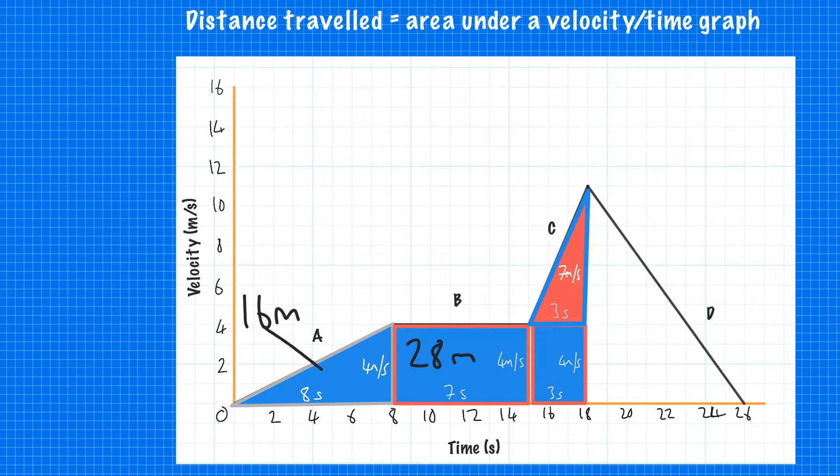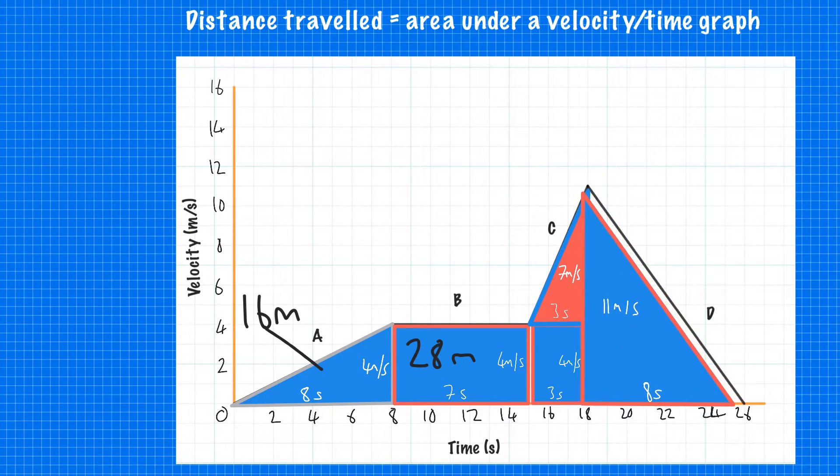For section D, we'd have a triangle like this. It would be half base times height: one-half times 11 times 8, and that gives you the total distance traveled throughout that journey.